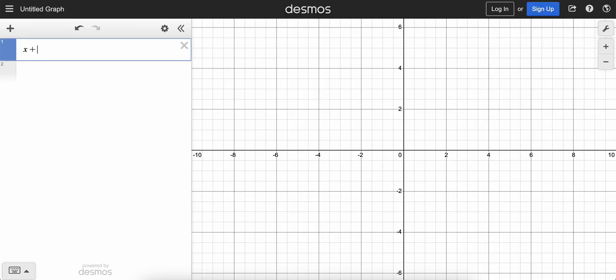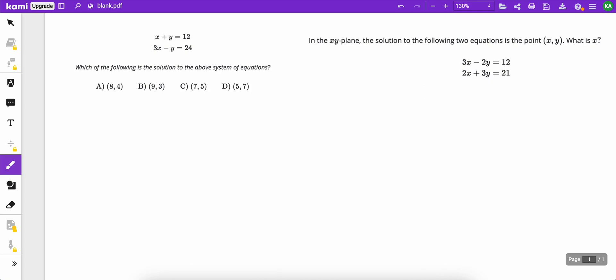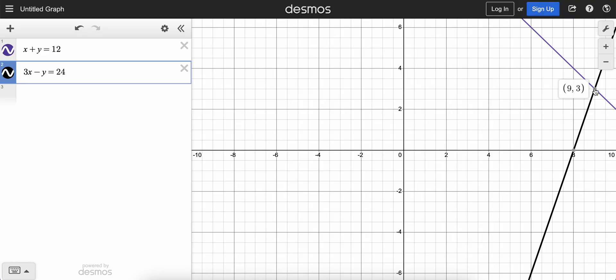And instead of having to do the tedious process of solving the system by hand, we can just type them in, and Desmos shows us the answer very easily. I just want to make sure I typed them in the right way. So you could see over here, the intersection point, 9, 3.